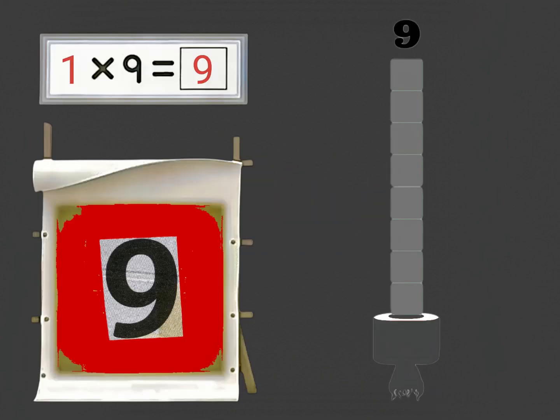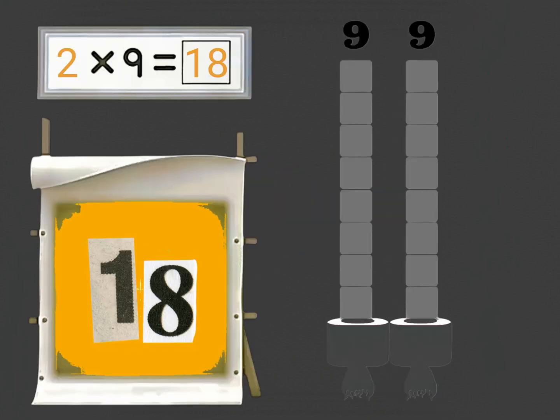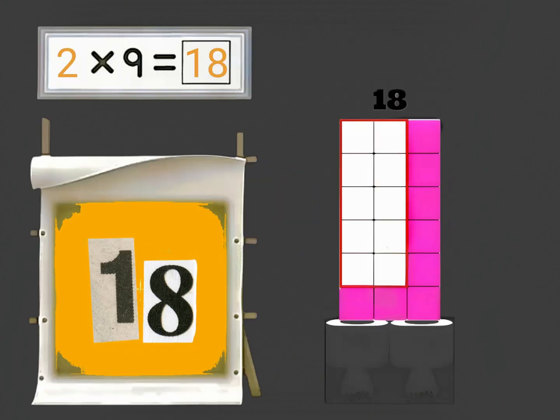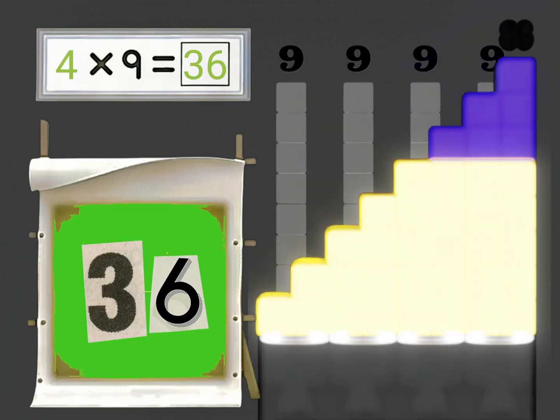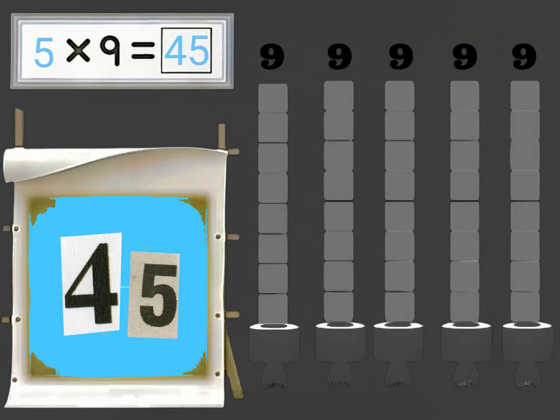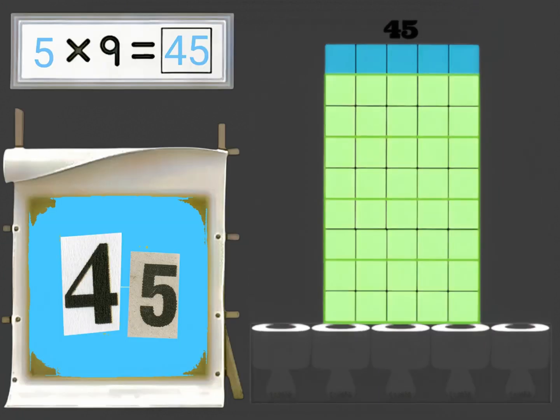One times nine is nine. Two times nine is eighteen. Three times nine is twenty-seven. Four times nine is thirty-six. Five times nine is forty-five. Time for nines to shine.